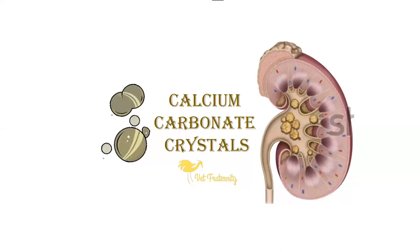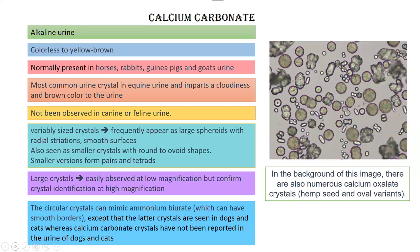In this video we are going to talk about calcium carbonate crystals. Calcium carbonate crystals form in alkaline urine. They are colorless to yellow-brown in color. They are normally present in horses, rabbits, guinea pigs, and goats urine, so you should remember that you are going to normally have these crystals in these species.